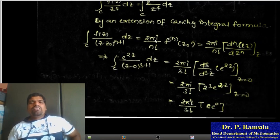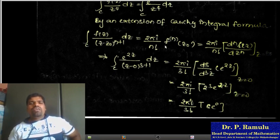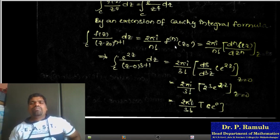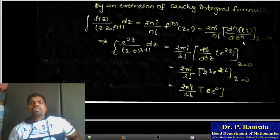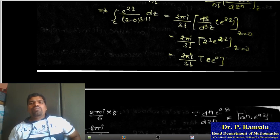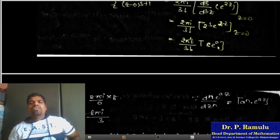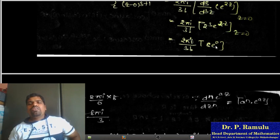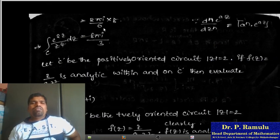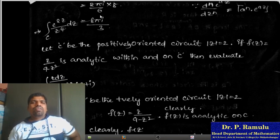By the extension of Cauchy's integral formula: integral over C of f(z)/(z - z₀)^(n+1) dz = 2πi/n! × f^(n)(z₀). Here n = 3 and z₀ = 0. The third derivative of e^(2z) is 8e^(2z). At z = 0, this equals 8e^0 = 8. So the result is 2πi/3! × 8 = 2πi × 8/6 = 8πi/3. Therefore the integration over C of e^(2z)/z^4 dz = 8πi/3.